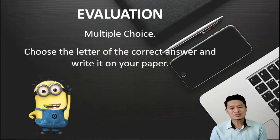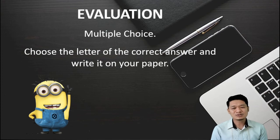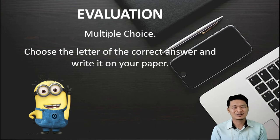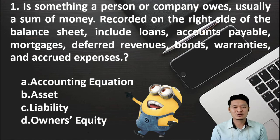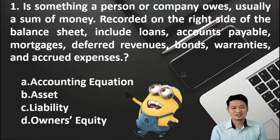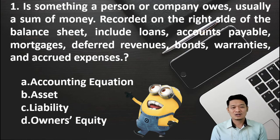Now, let's proceed to your evaluation. It is a multiple choice. Choose the letter of the correct answer and write it on your paper. Part number 1: Is something a person or company owes, usually a sum of money, recorded on the right side of the balance sheet. Includes loans, accounts payable, mortgages, deferred revenues, bonds, warranties, and accrued expenses. Is it letter A, accounting equation? Letter B, asset? Letter C, liability? Or D, owner's equity?